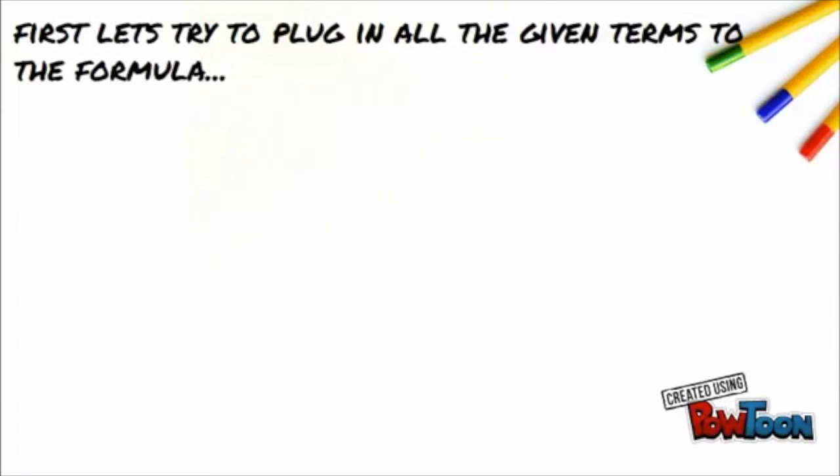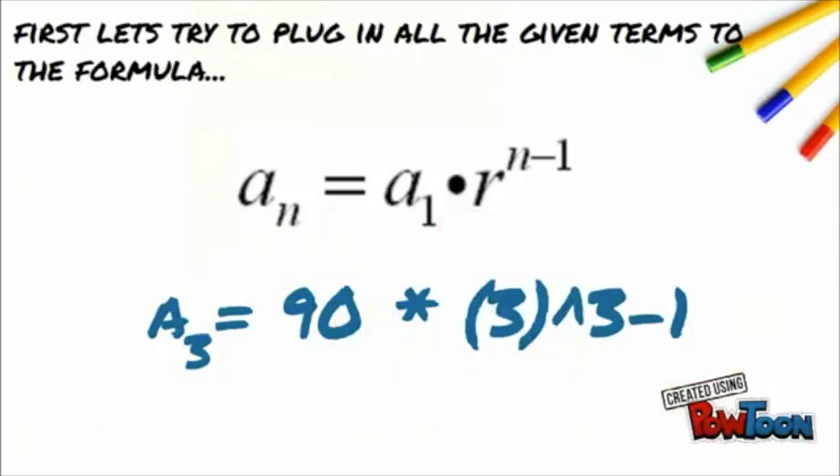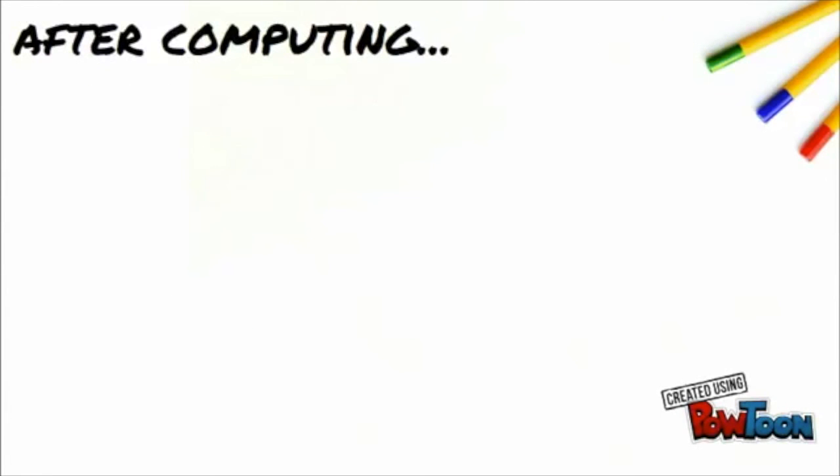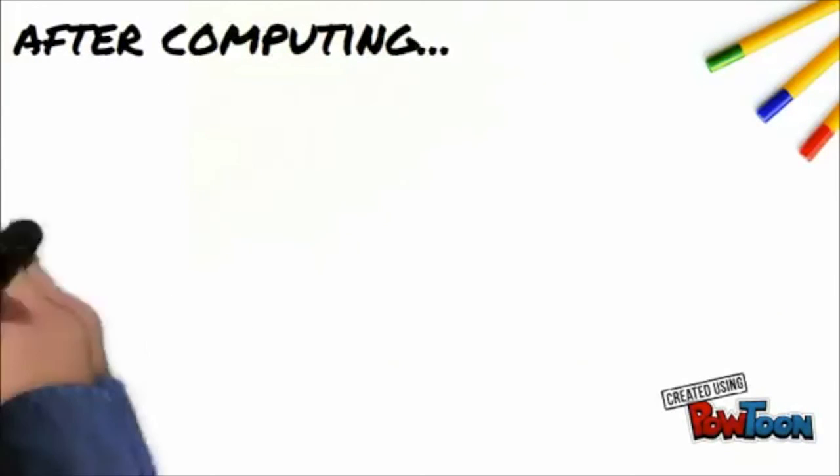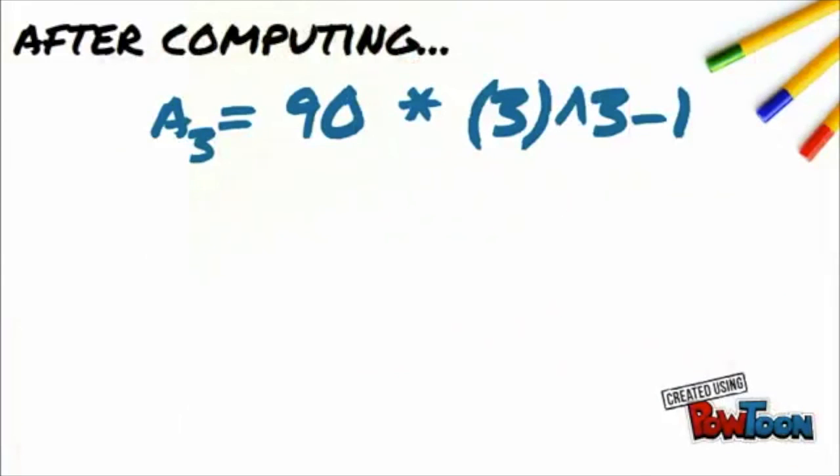To solve for this, all we need to do is find and plug in the terms to the formula. We will denote a sub 1 as 90 since they collected 90 crayons at 4pm. A sub 2 and a sub 3 is unknown since we don't know how much crayons they collected at 5pm and 6pm. Our ratio will be 3 since it is stated that the number multiplies by 3 every hour. And n will become 3 since we are finding the number of crayons at 6pm or the third hour.